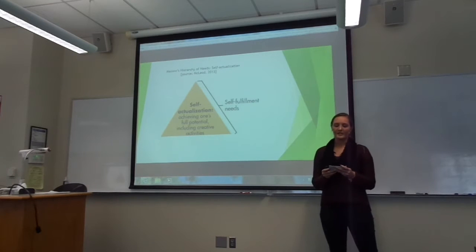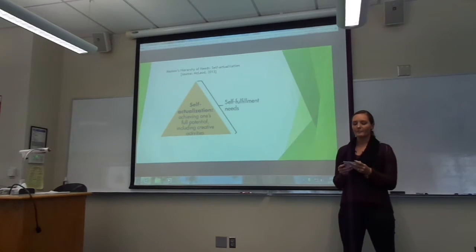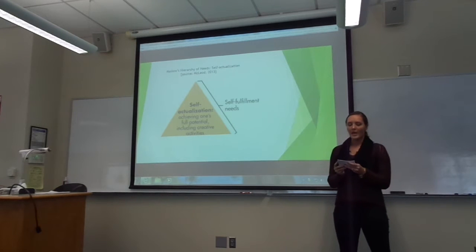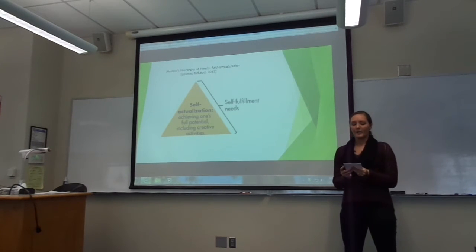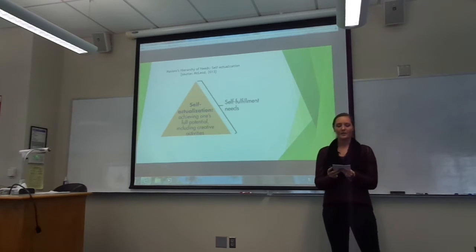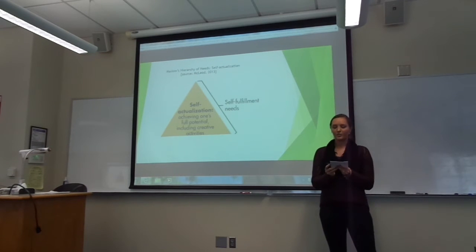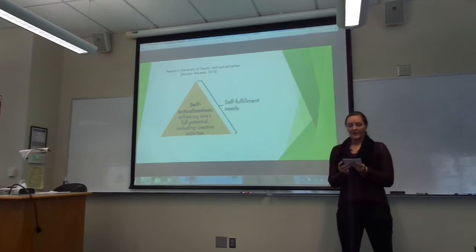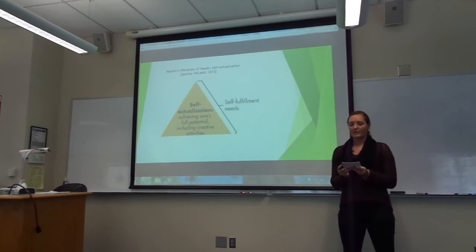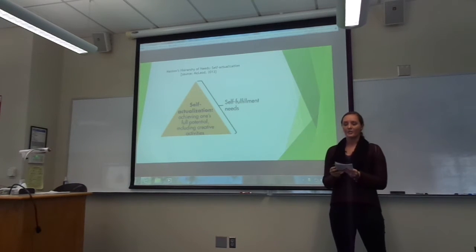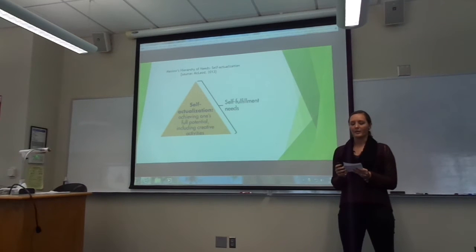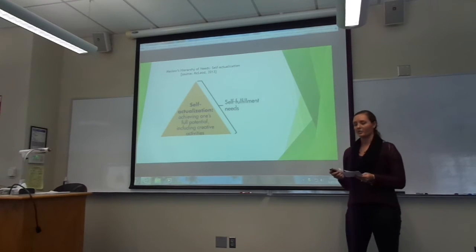The fifth and final tier is self-actualization. According to Maslow, a self-actualized person has reached their full potential. However, self-actualization is not a state of being, but a continued process for personal growth and discovery. It can be achieved by participating in creative activity and abstract thought. There is no strict set of guidelines to determine if any individual has met this goal, and it is possible there is no way to officially achieve this.